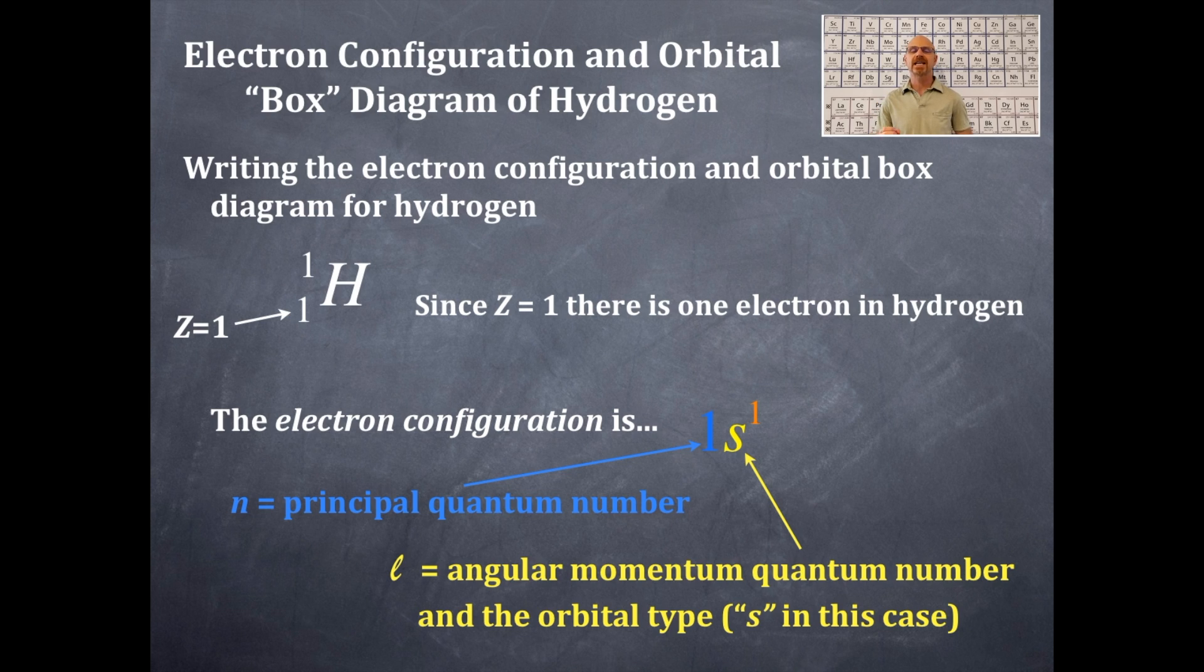This s is the angular momentum quantum number, which is l. And for an s-type orbital, it is actually a zero because it's n minus one. And since n is equal to one, then it's n minus one. So therefore, the l is equal to zero, which corresponds to an s-type orbital. So therefore, the s.